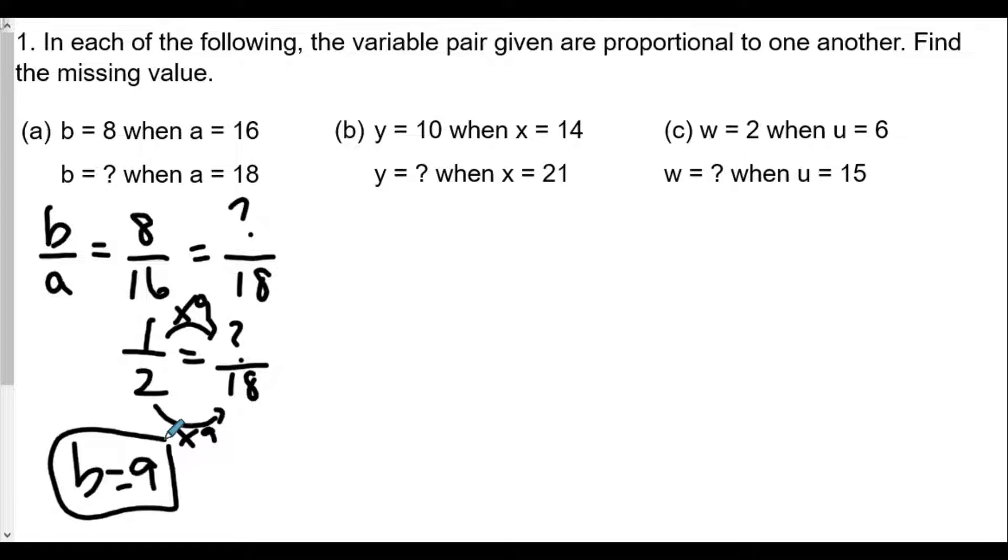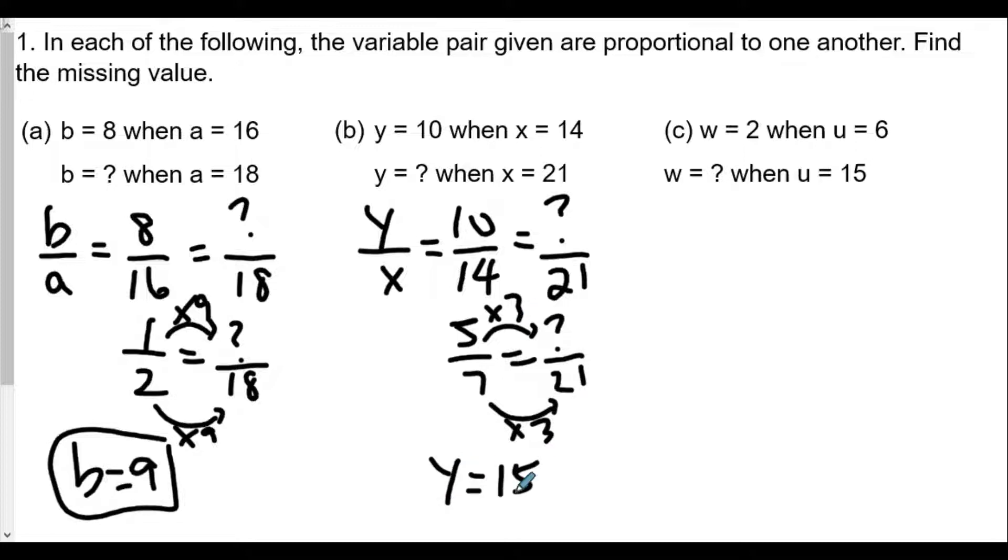For part b we have y equals 10 when x equals 14. So we set up our ratio y over x and that's equal to 10 when x equals 14. So y is 10, x is 14. We want to find out the unknown y value when x is 21. In the same way we're going to simplify the 10 over 14 to get 5 over 7, equals unknown over 21. And we'll see in this case that 7 times 3 is 21, therefore multiply the numerator by 3. So 5 times 3 is 15. Our missing y value will be 15 in this situation.